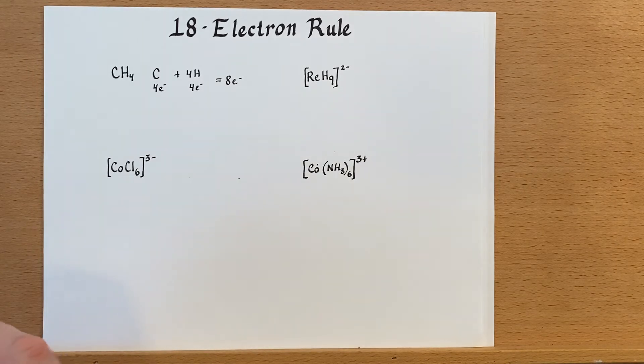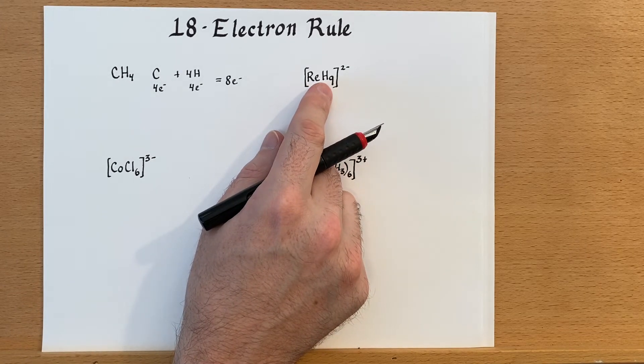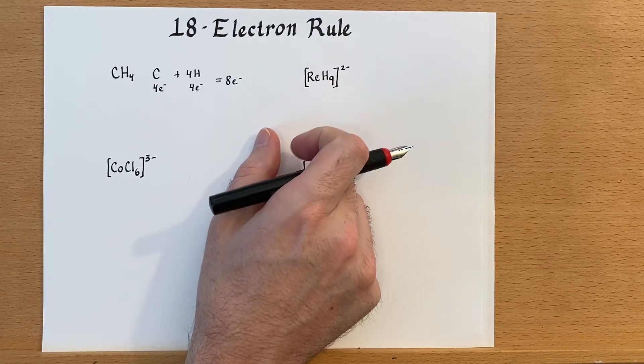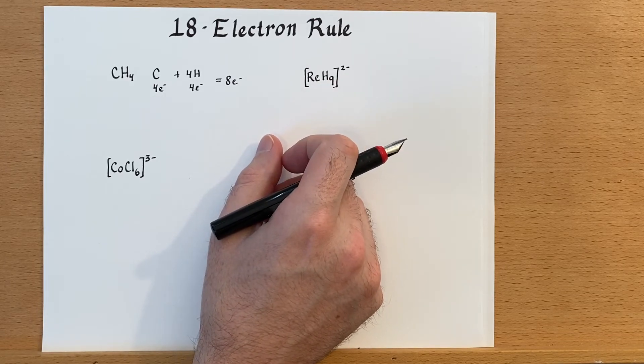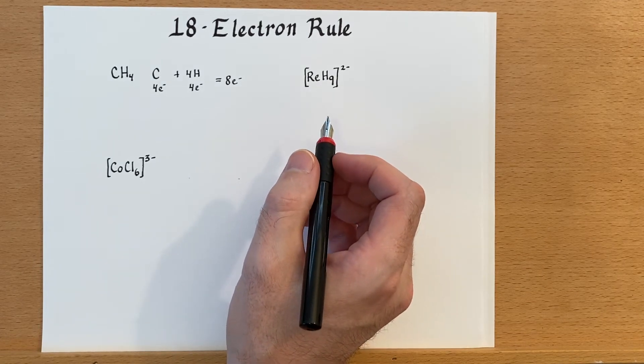Now when we start talking about coordination complexes, we can add more electrons to that. So here we have a rhenium hydride anion because it's negatively charged. So let's do a little electron counting with this.